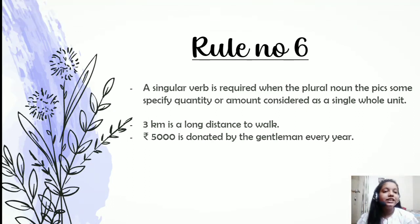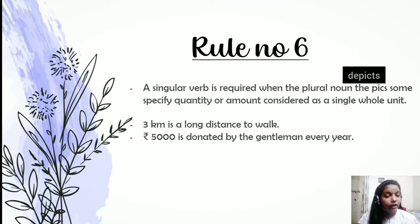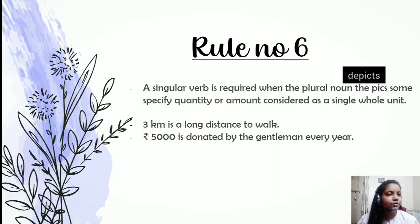Rule six: a singular verb is required when a plural noun depicts a specific quantity or amount considered as a single whole unit. For example, 'three kilometers is a long distance to walk' — 'three kilometers' refers to a specific quantity, so it is treated as a single unit and takes the singular verb 'is.' Similarly, '500 rupees is donated' and '50 kgs is transported to the next village' — these specify a particular quantity and are therefore treated as single units with singular verbs.